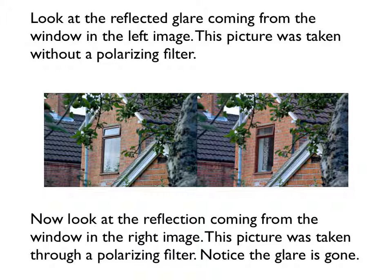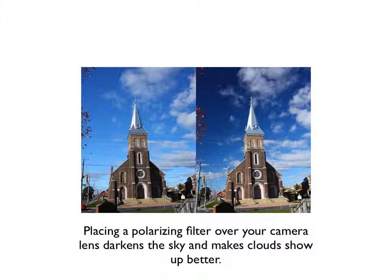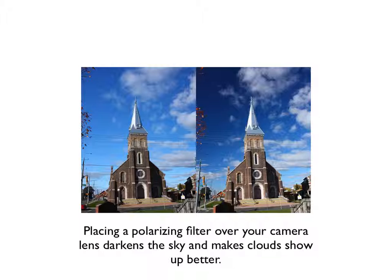Polarizing filters are often used in photography. Photographers will often use a polarizing filter on their lens to darken the sky and make clouds stand out more vividly. Here are two images of an identical scene: the image on the left was taken without a polarizing filter, and the picture on the right is identical but with a polarizing filter placed over the lens. Notice the darker sky and how the clouds stand out better in the right image.